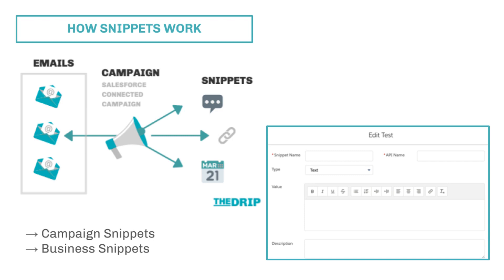One thing to mention here is that there are now two types of snippets. For the majority of us, we'll be using what's known as campaign snippets — those associated to a campaign. But there are also now business snippets, which can be used across a whole business unit rather than being restricted to one campaign. If you're using business units, you've got a bonus feature there.